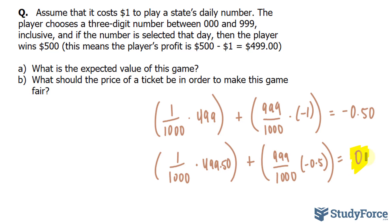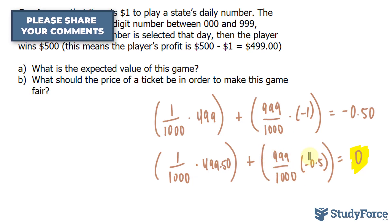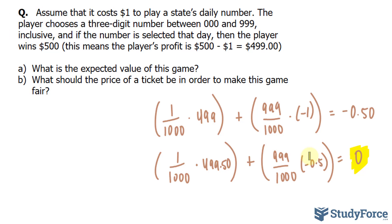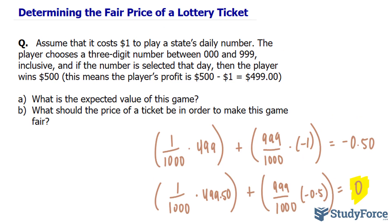Now the cool thing about this is that you can apply this to any lottery that you play. Take any lottery, find out the probability and multiply it by the prize. Then add the probability of losing times how much you paid, and that should give you the expected value for the game. If you have any further questions, please leave them in the comments section below. And now you know how to determine the fair price of a lottery ticket.